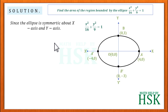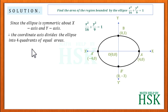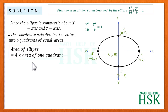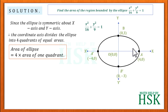Since the ellipse is symmetric about both the x-axis and y-axis, the coordinate axes divide the ellipse into four quadrants of equal area. Therefore, the area of the ellipse is equal to four times the area of one quadrant.